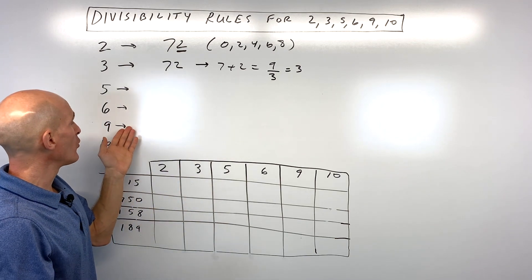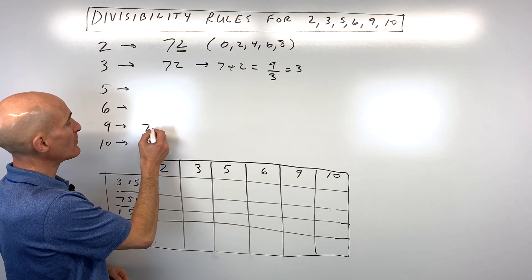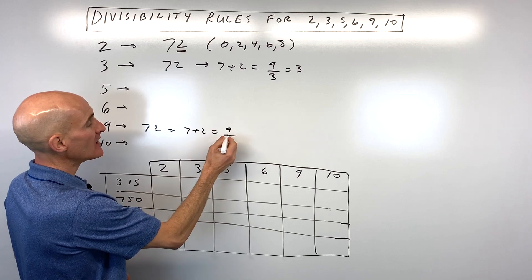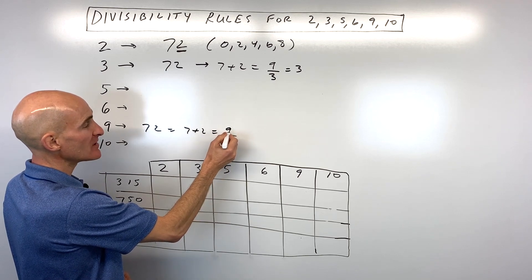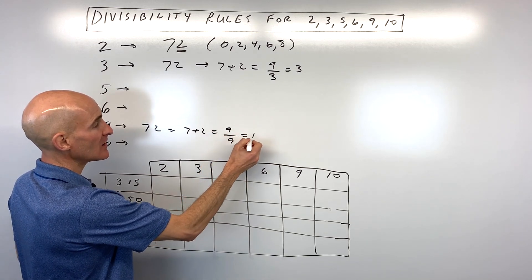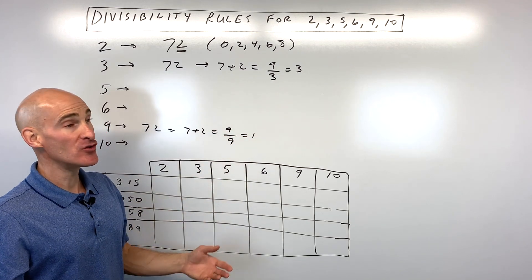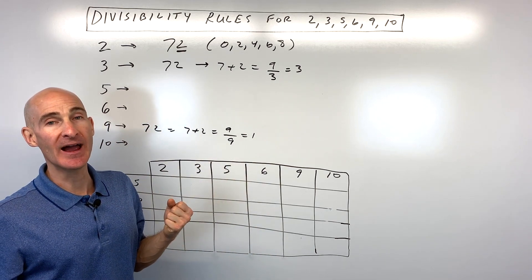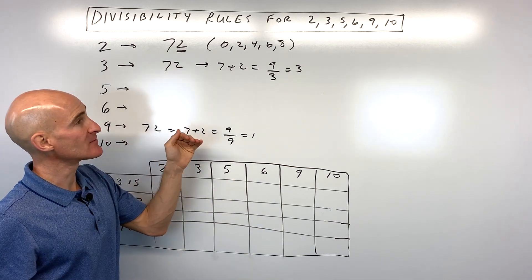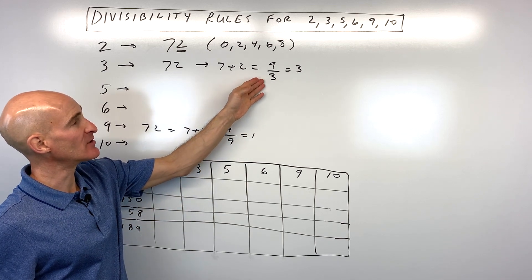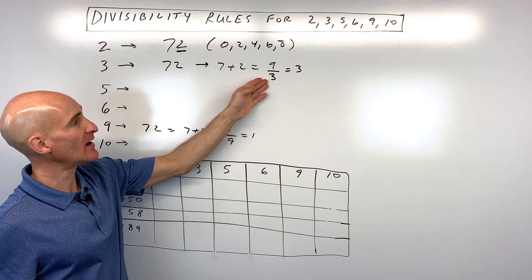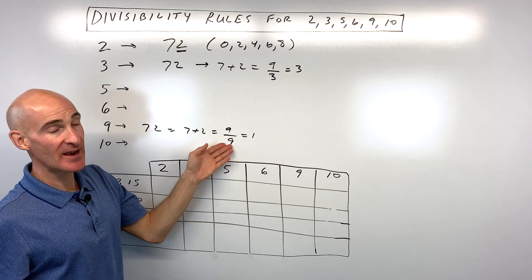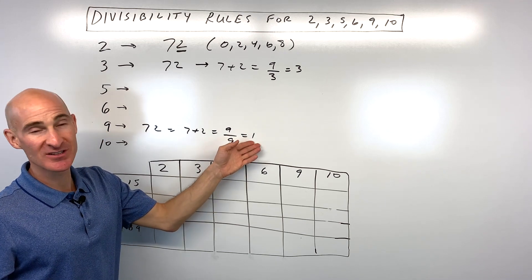The same rule applies for 9. For example, if I had 72 again, we can see 7 plus 2 equals 9. If the sum of the digits is divisible by 9 and you get an integer, then you know that the whole number, 72, is divisible by 9. So the rule for 3 and 9 is very similar: if the sum of the digits is divisible by 3, the number is divisible by 3; if the sum of the digits is divisible by 9, the number is divisible by 9.